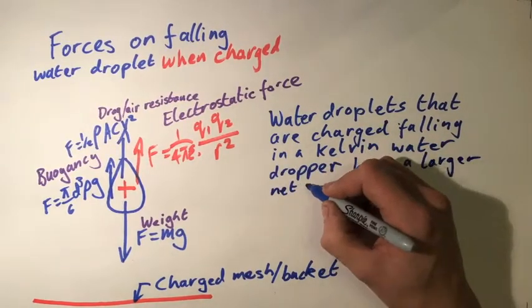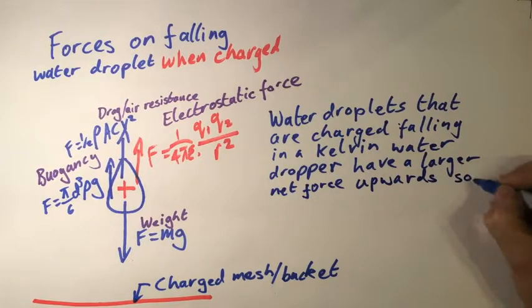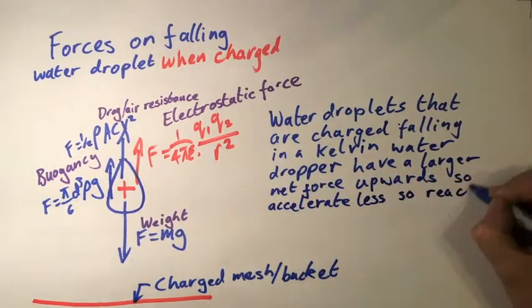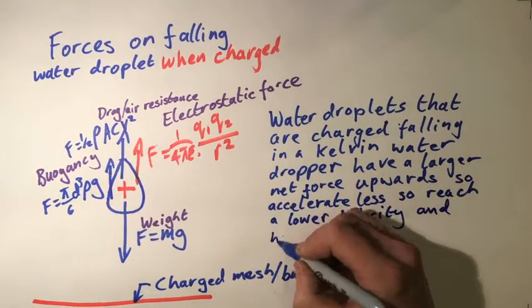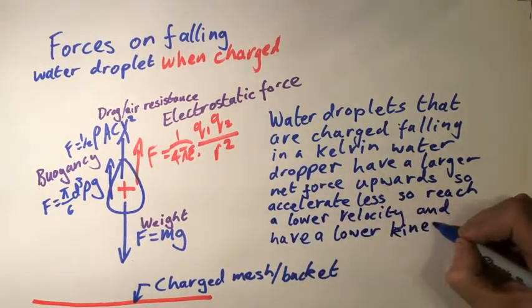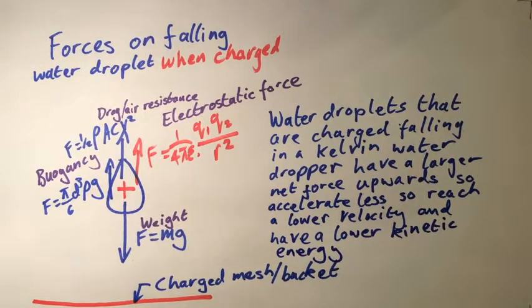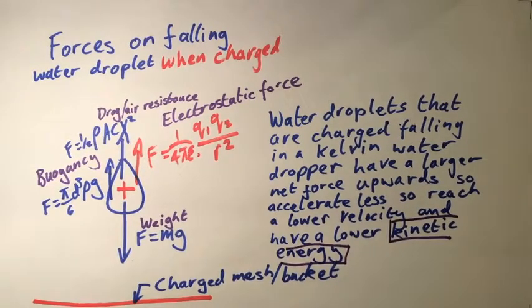What this tells us is that water droplets that are charged falling in a Kelvin thunderstorm have a larger net force upwards, so accelerate less, so reach a lower velocity and have lower kinetic energy. Now we're getting somewhere towards an answer because we're talking about the energy.